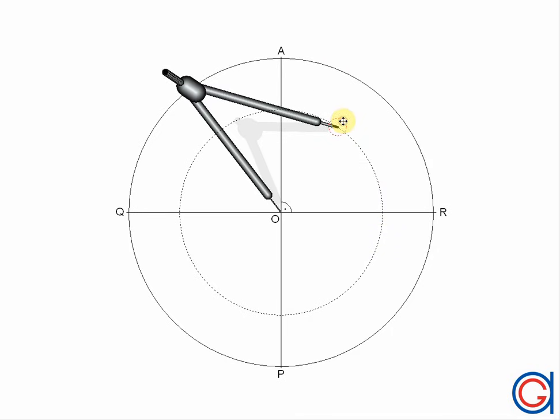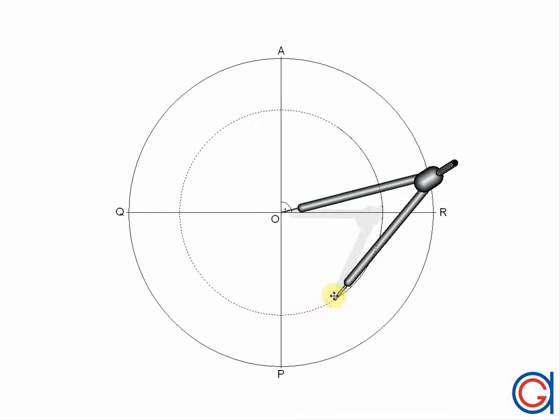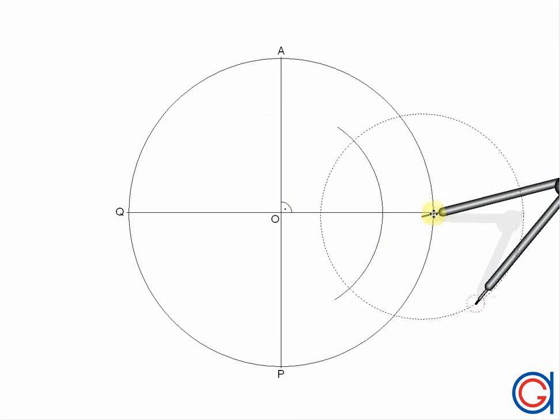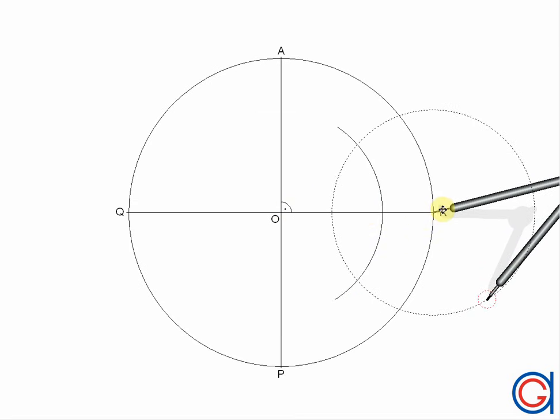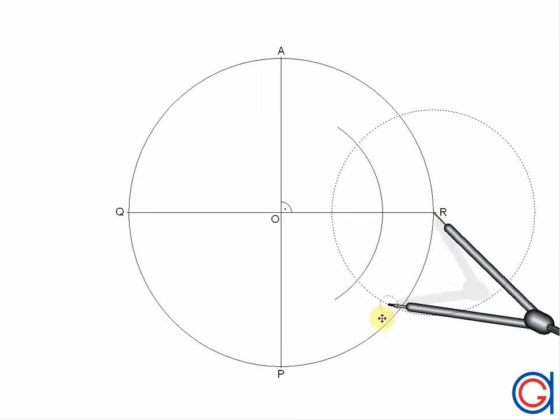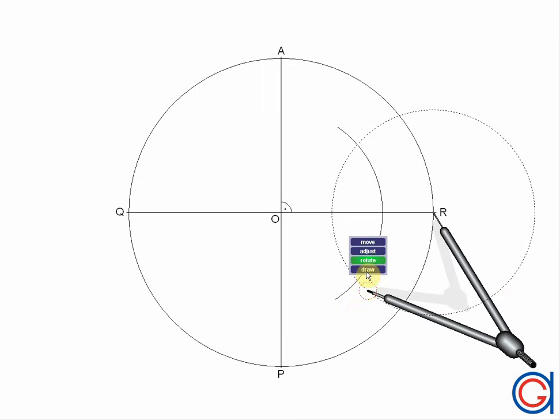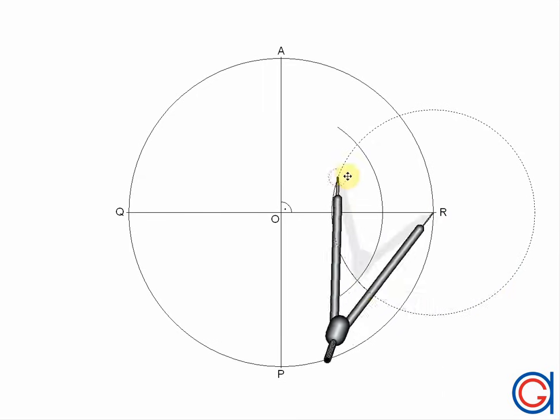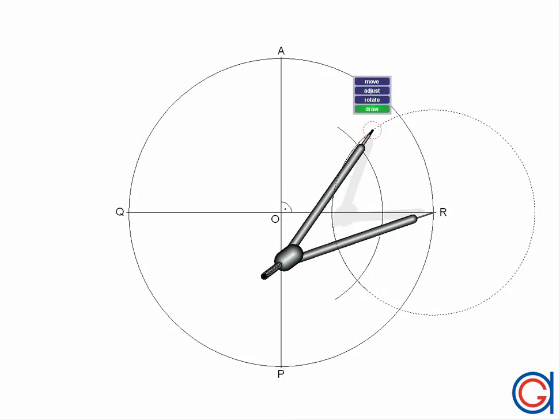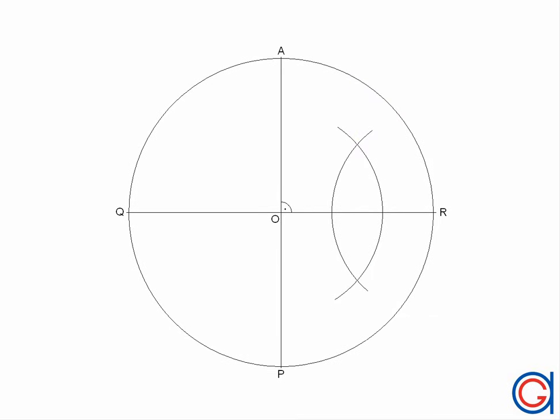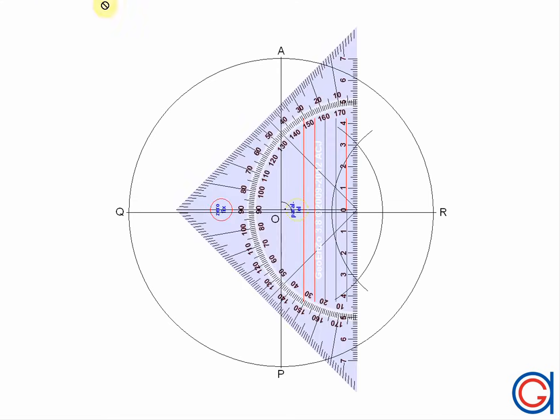The next step is to calculate the perpendicular bisector of the line segment OR. To do this, we must draw two arcs with the same radiuses. These radiuses must be longer than half of the line segment. The centers of these two arcs are O and R. These two arcs intersect at two points, and now we will join these two points. Where it cuts the radius OR, this will be the midpoint M of the radius.